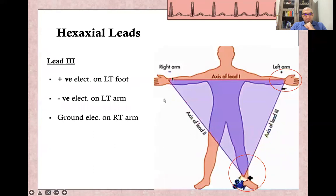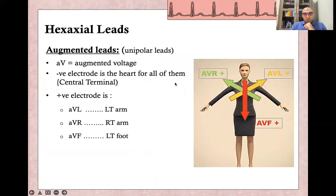Lead 3 has a positive electrode in the left foot and negative electrode in the left arm — lead 3 goes from left arm to left foot. The ground electrode is in the right arm. After that, augmented leads, which are all unipolar leads.